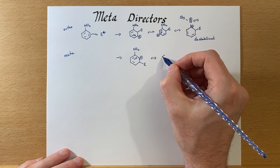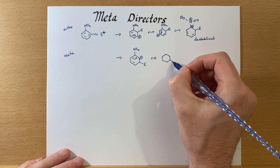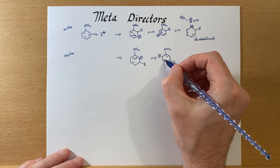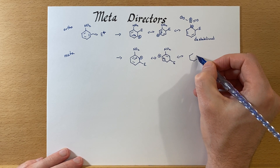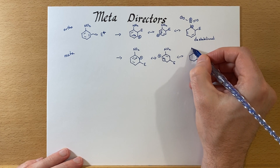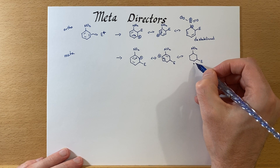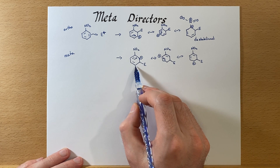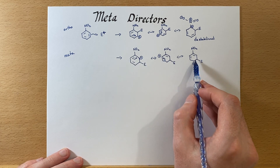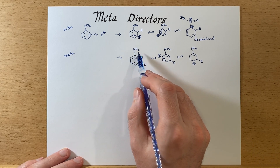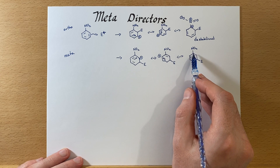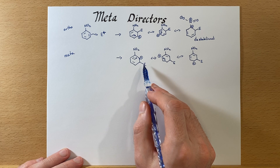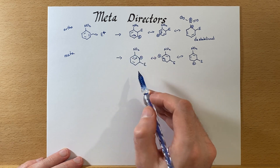Let's look at all the resonance structures we can draw for this. We can see that the ortho and meta positions respectively all have a partial positive charge on them, but notice how none of these partial positive charges appear on the carbon with the electron withdrawing group — so none of these are particularly destabilized. This positive charge does not appear next to the electron withdrawing group.